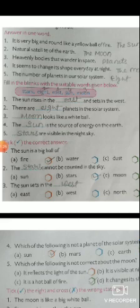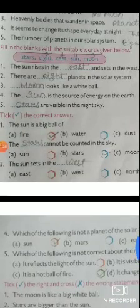Exercise C: Fill in the blanks with suitable words given below. Question 1: The sun rises in the east and sets in the west. Question 2: There are 8 planets in the solar system.